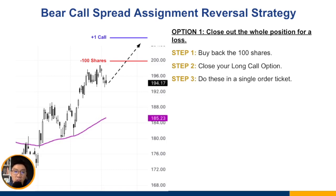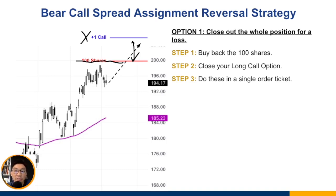Instead, what you want to do is buy back the 100 shares. When you buy back the 100 shares, you have no position there. Then just close out this long call position — do all this in a single order ticket. When you sell away the call option, chances are there's still some extrinsic value left in it. That extrinsic value is going to help you reduce the maximum loss. If you exercise it instead, you basically forfeit any extrinsic value. So just sell it off rather than exercising it.